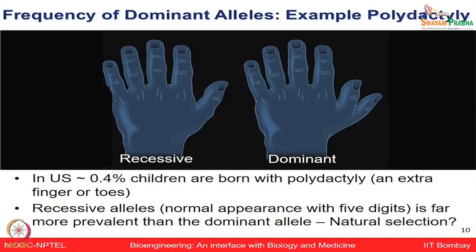People have also looked at the frequency of dominant alleles. Look at this hand — this is one dominant characteristic where many children born in the US have polydactyly, meaning multiple fingers more than five. This extra finger or toes is an example of polydactyly. The recessive allele — the normal appearance with five digits — is far more prevalent than the dominant allele.